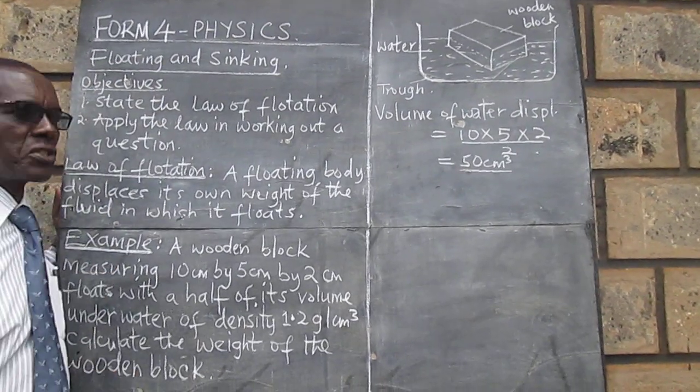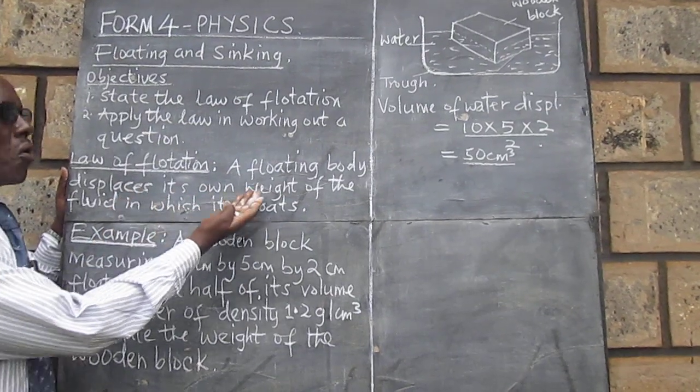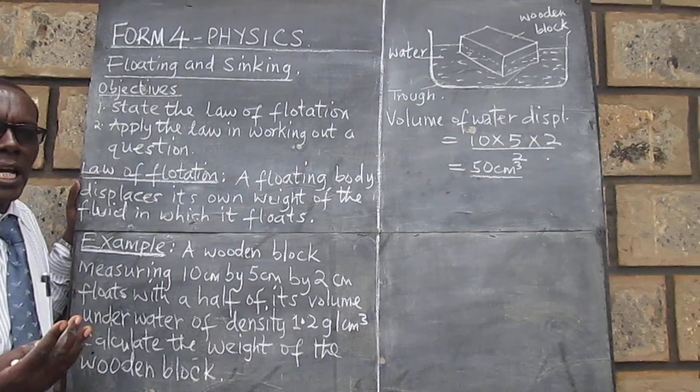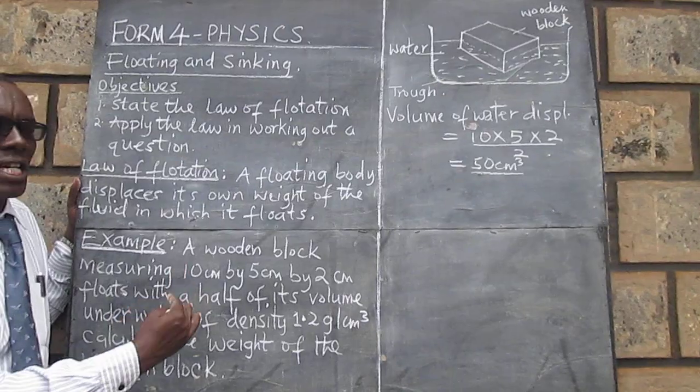Let's go back to the law of floatation. A floating body displaces its own weight of the fluid in which it floats. So we need now to get the mass of fluid displaced, the mass of the water displaced.